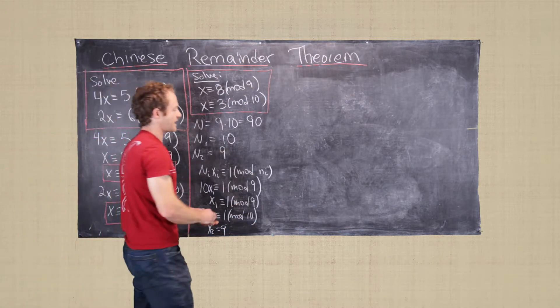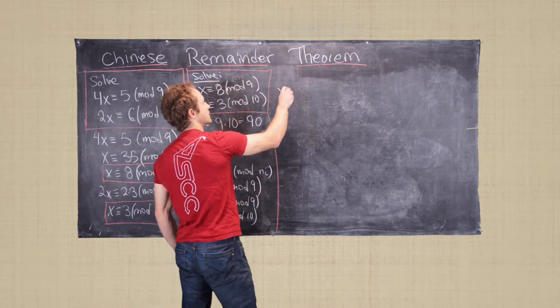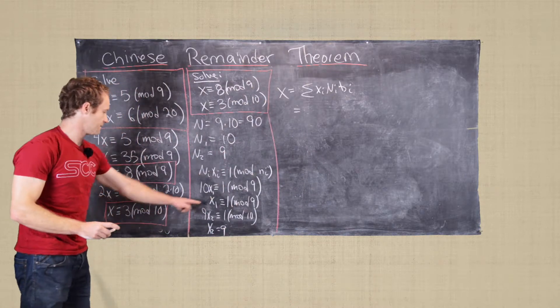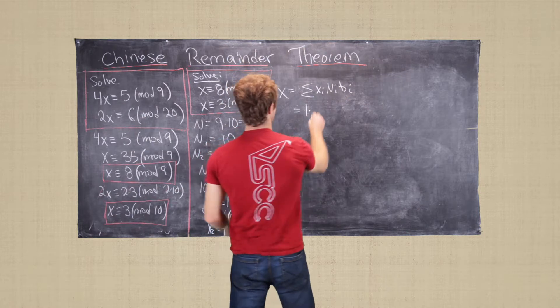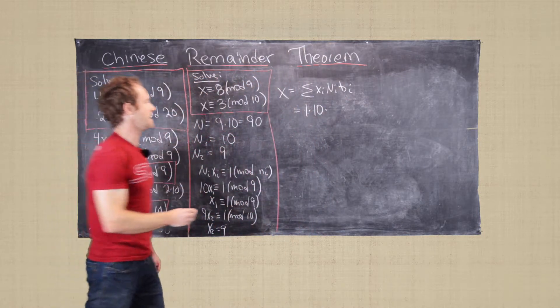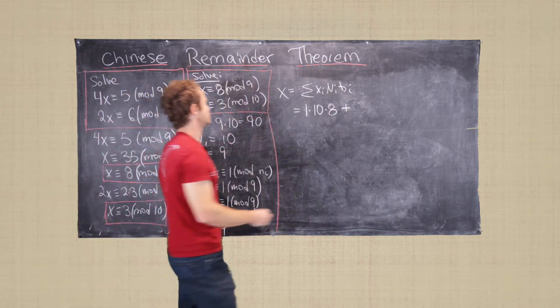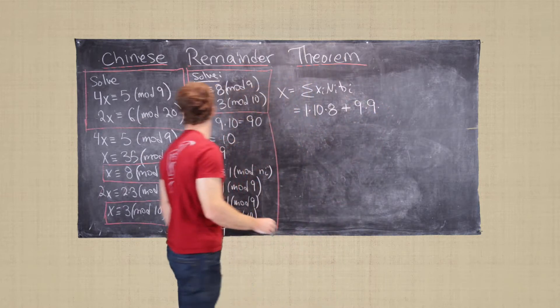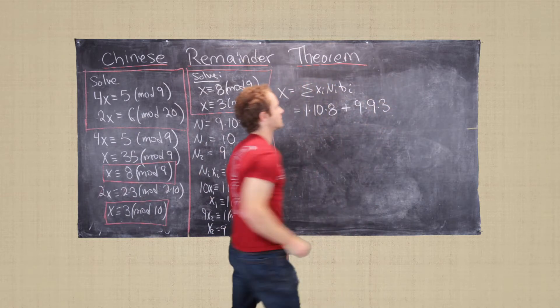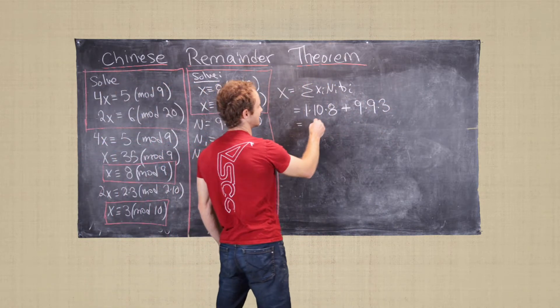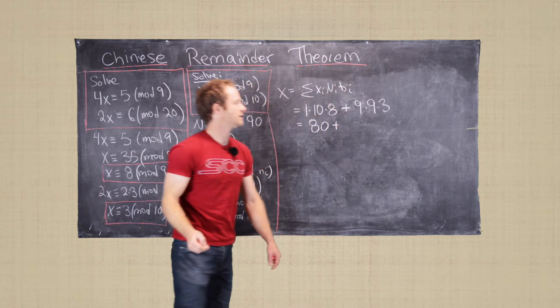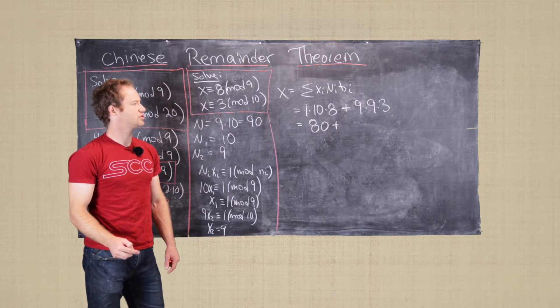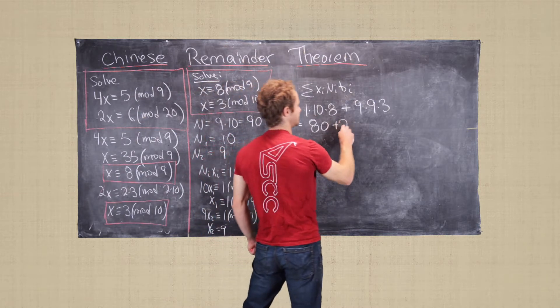Fantastic. Now we can go on to the next step of constructing our solution. So we want to set x equal to the sum of the x_i, the n_i, and the b_i. So that's going to be x_1, 1 times n_1, which is 10, times b_1, which is 8, plus x_2, which is 9, times n_2, which is 9, times b_2, which is 3. So now notice that is going to give us 80 plus 81 times 3. So 81 times 3 is 243. So we have 243.